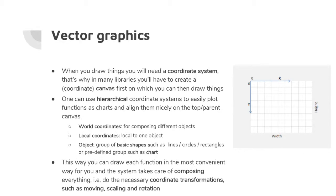When creating a plot you're basically using vector graphics. You have a coordinate system — in mathematics it's usually at the bottom left, but in graphical libraries it's often at the top left, so with y=0 you're in the top left corner. In many Python libraries you first create a canvas or figure in Matplotlib, and on that figure you can start drawing.